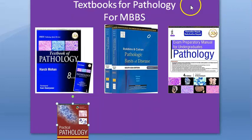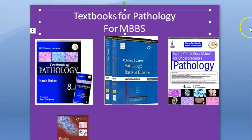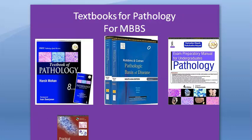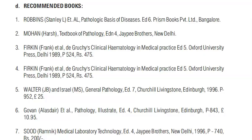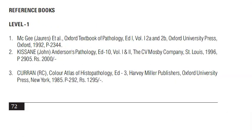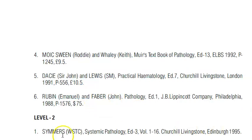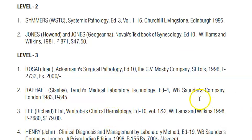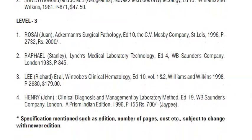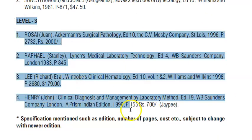So this is about the textbooks for pathology — the realistic books that students actually read. Now let us look at what the university recommends. You may want to revisit your university website to get the recommended books. Some of the recommended books include Robbins, Harsh Mohan, etc. If you want to go further, level 1 reference books are available, then level 2, and here you have the level 3 reference books.